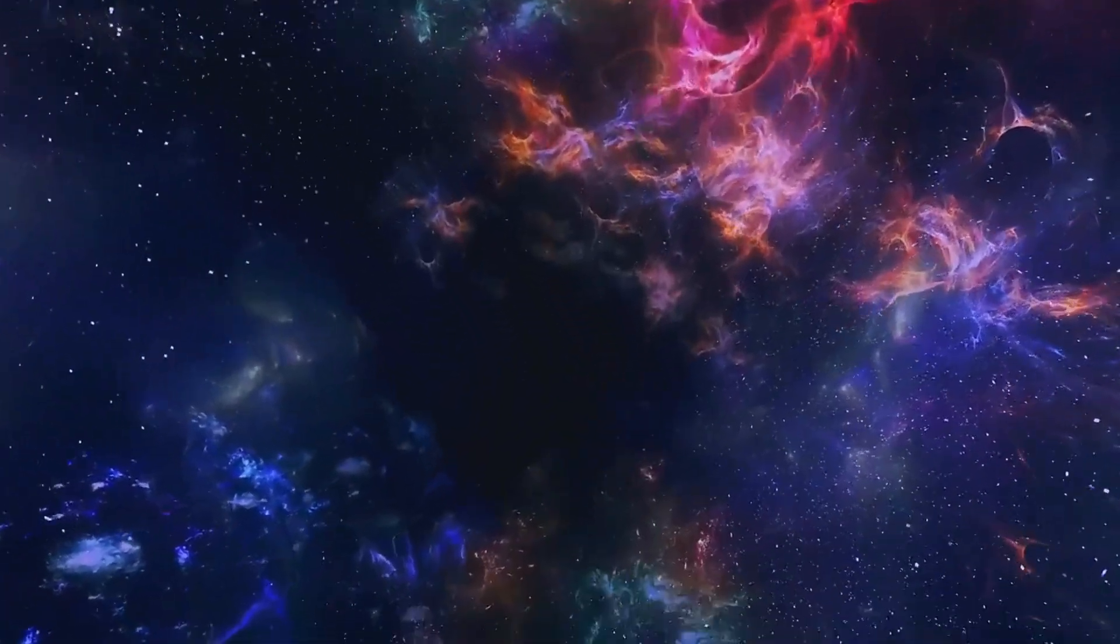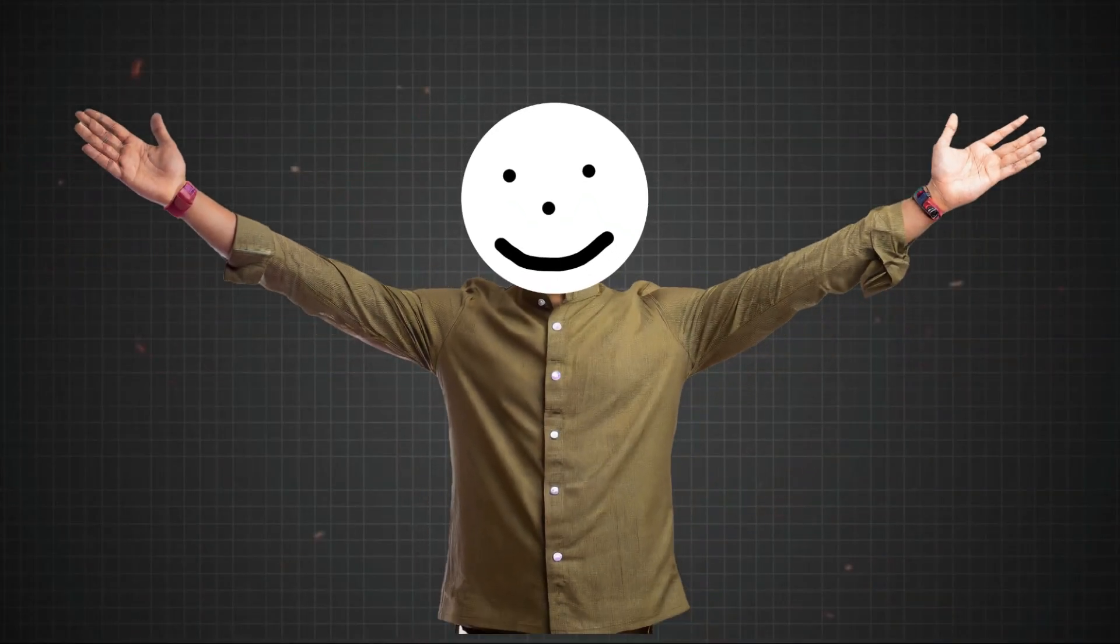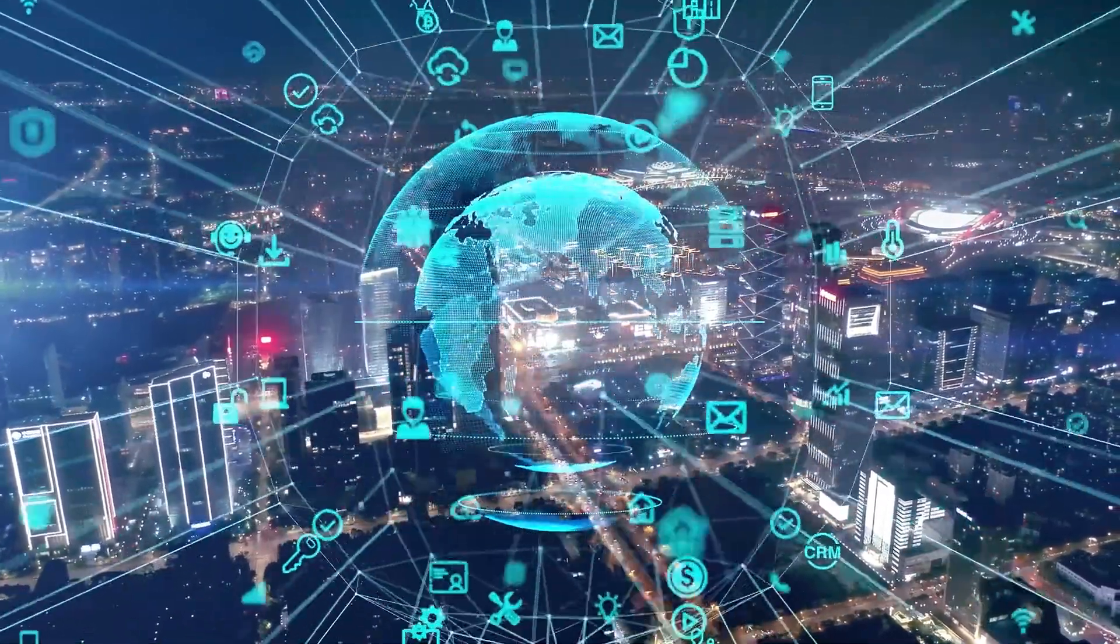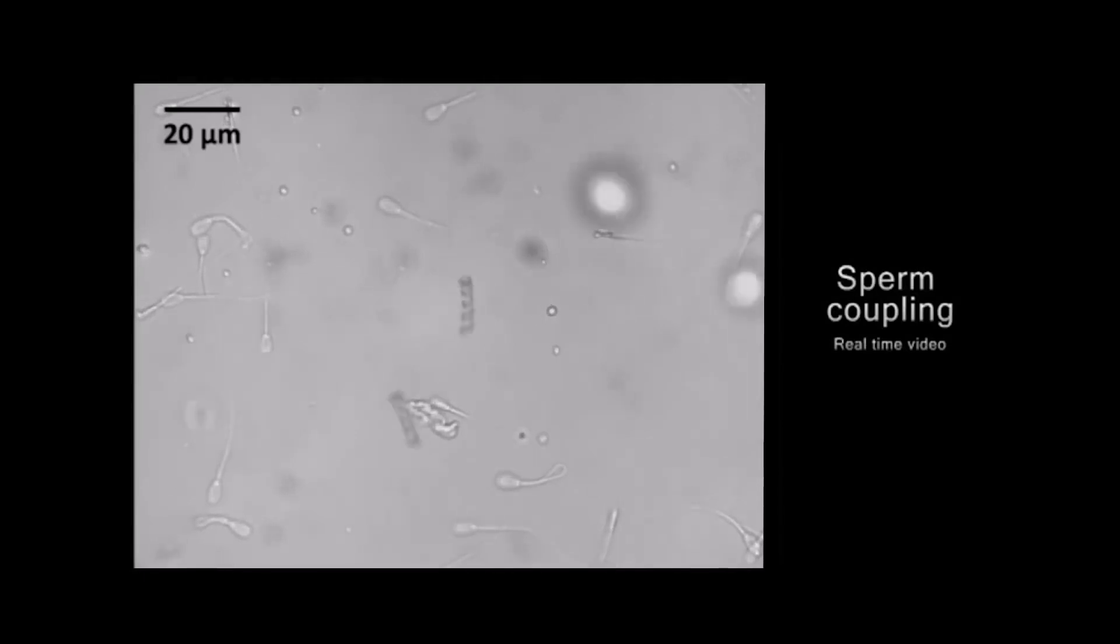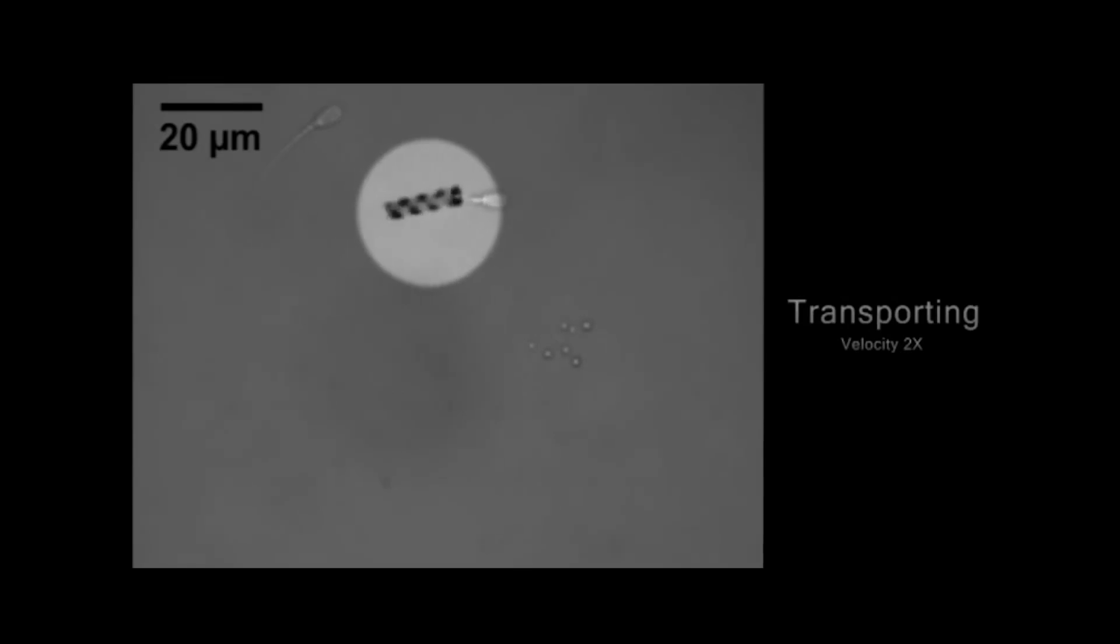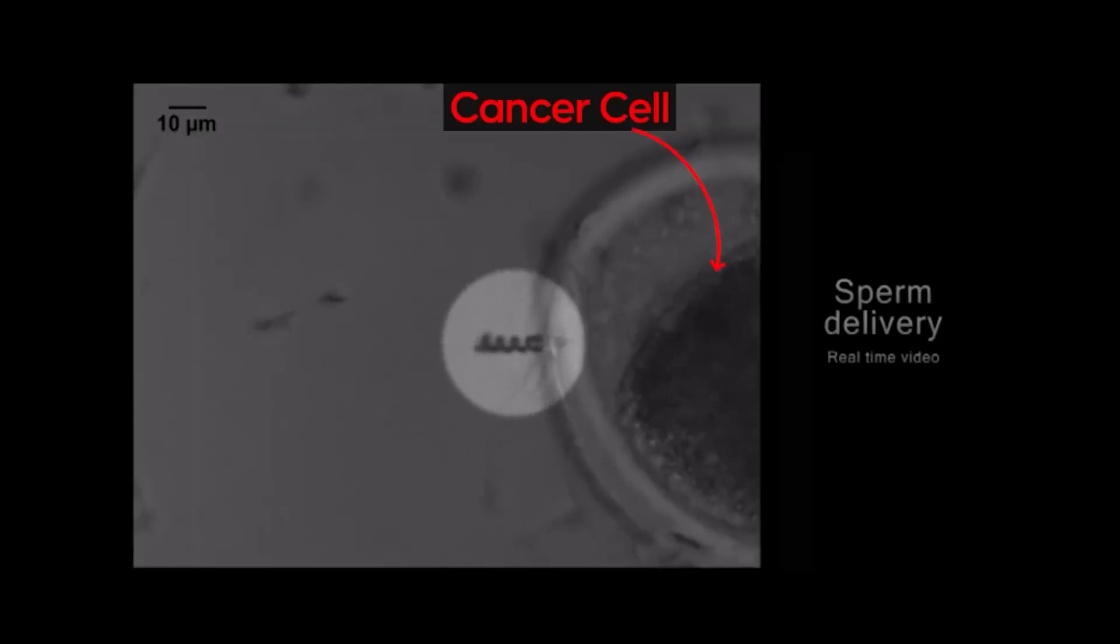But the progress science is making on a large scale is not as interesting as the technologies that have developed on a micro scale. Watch this video closely to see how this spring-like tiny thing is spinning rapidly on its own, and how it is capturing a sluggish sperm and injecting it into an egg.